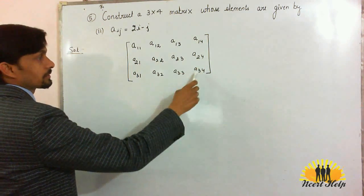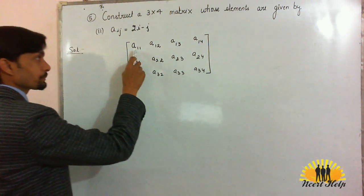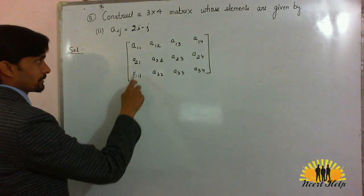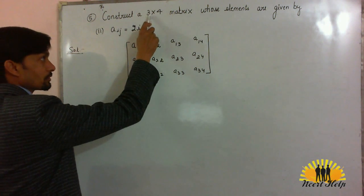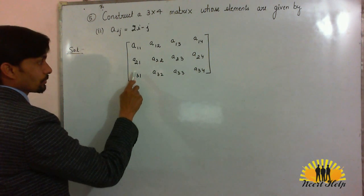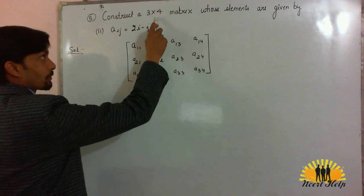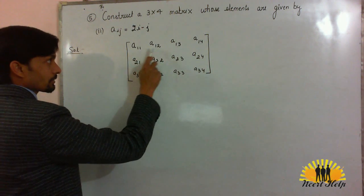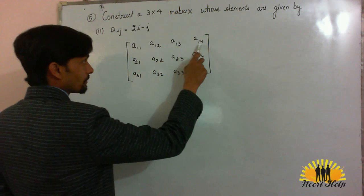where the first number represents the row number because we have 3 rows: row 1, row 2, row 3. And there are 4 columns so the second number represents column: column 1, column 2, column 3, and column 4.